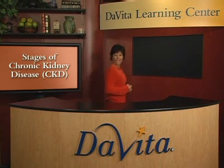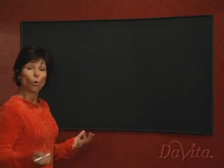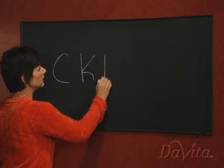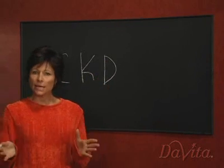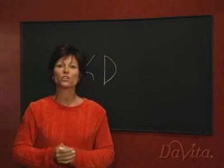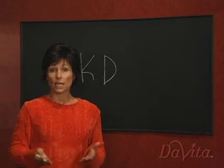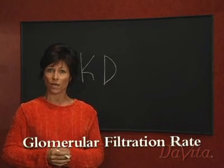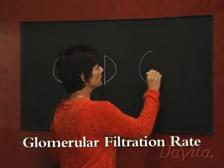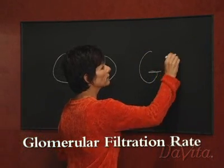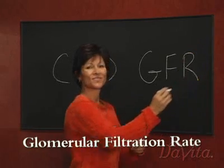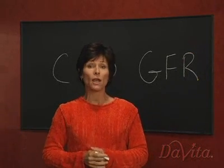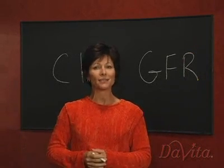Generally, when someone is diagnosed with chronic kidney disease, or CKD, the next step is to determine the stage of the disease. Each stage is determined by the glomerular filtration rate, or GFR, which is a measure of kidney function, or how well kidneys are cleaning the blood.